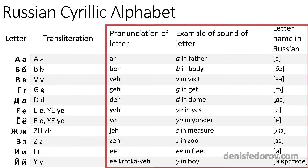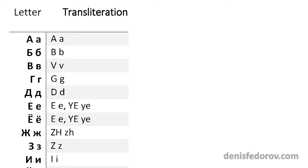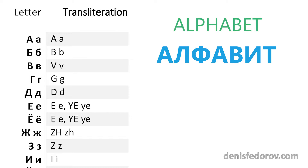There are 5 columns in the PDF. The 3 last columns are for reference and the 2 first are about the transliteration actually. In the first column there are Russian uppercase and lowercase letters, and in the second there is an English transliteration for them, also with capital and small letters.